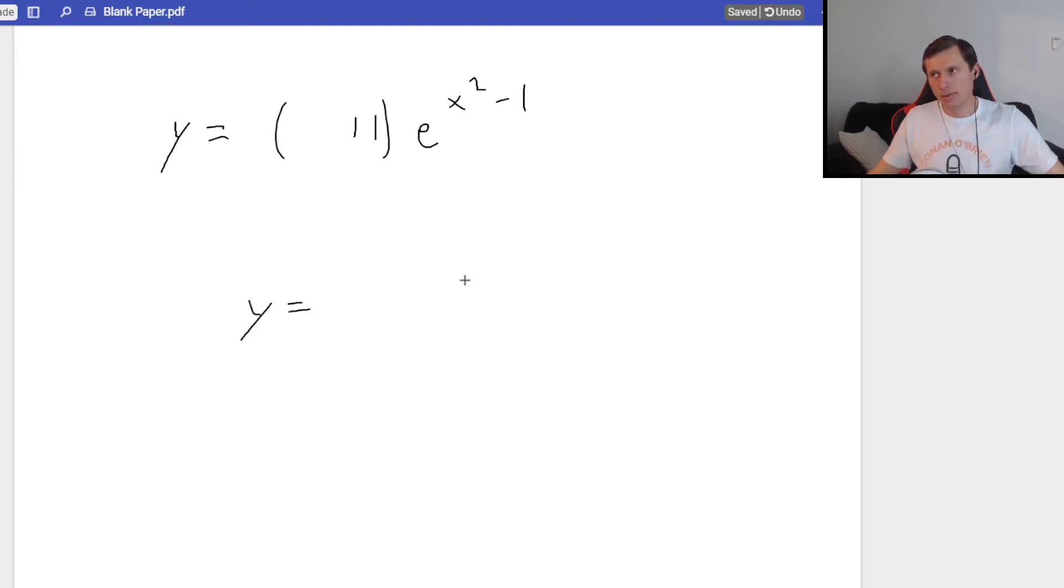So it would be y equals x to the fifth plus 1 as a coefficient. And then all that in parentheses. And then e to the negative x, and then raise that to the fifth. Yeah, we'll deal with this example since it's hard and very fun.